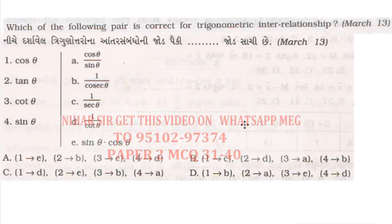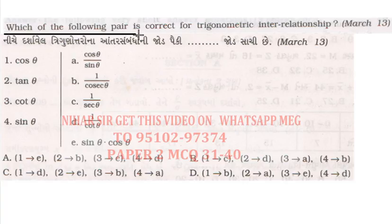Hello friends, this is the 4th video on Paper Number 2, MCQ from 31 to 40. Let's start with this one: which of the following pair is correct for trigonometric interrelationships?